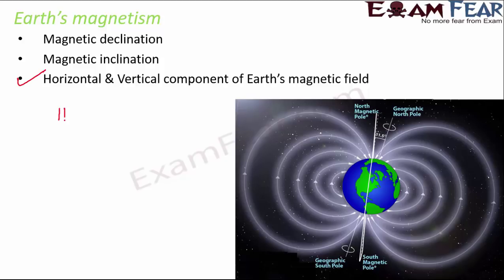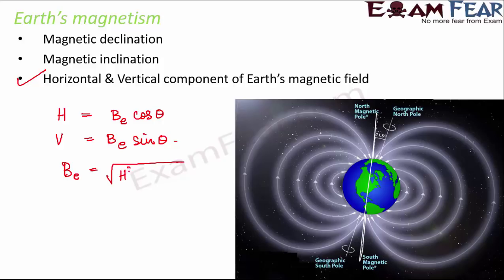The third component is the horizontal and vertical components of earth's magnetic field. The horizontal component equals the magnetic field of the earth into cos theta. The vertical component equals the magnetic field of the earth into sin theta. The net magnetic field is root over horizontal component squared plus vertical component squared.